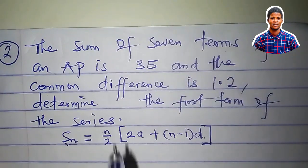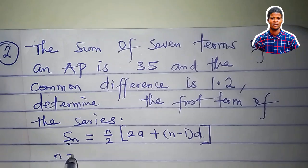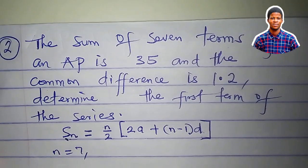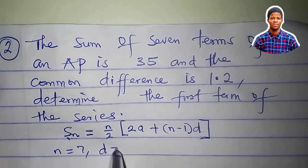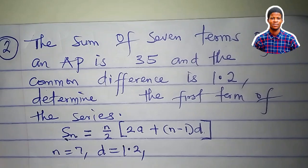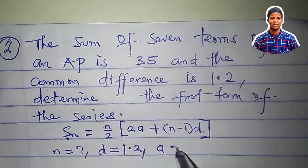They said the sum of 7 terms. That means n equals 7. In this case, n is 7. The common difference is 1.2, so d equals 1.2.